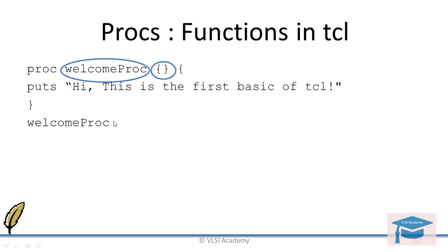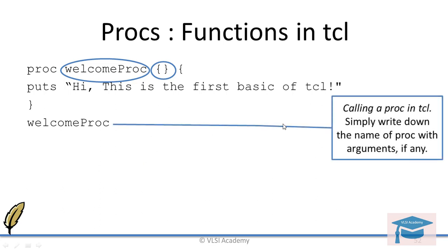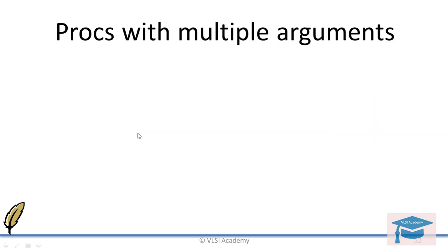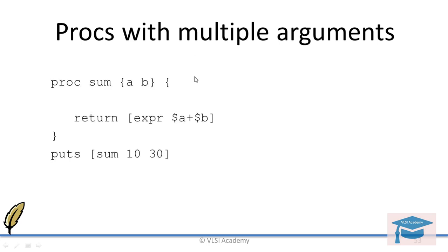If there is no argument that is one case, but if there is an argument then it is a different case that we will see later on. Calling a proc in Tcl is simply writing down the proc name and arguments if any. Then we will see procedures with multiple arguments, where we define arguments inside a proc.